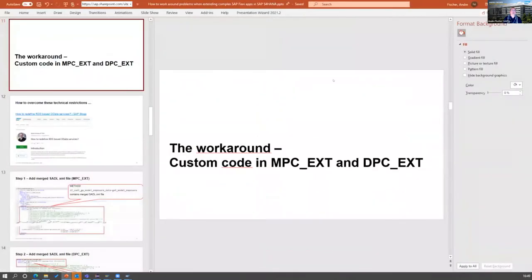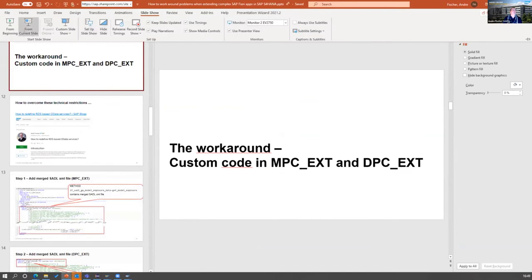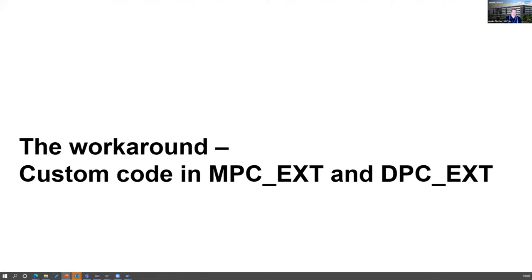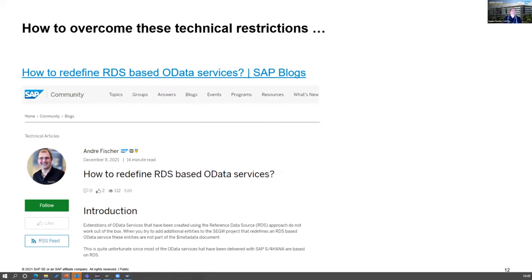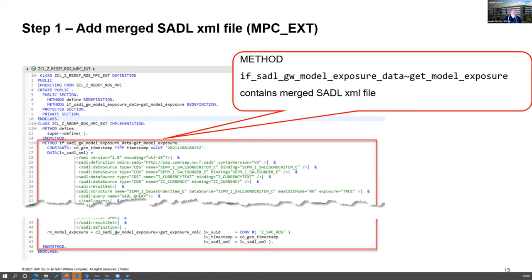The workaround is to write custom code into the MPCXT and DPCXT. I've also published this as a blog post. The first step is to create a merged SADL XML file. When looking at the source code of the MPC class of an OData service created via reference data source, we find an XML file containing the structure of the CDS views used.